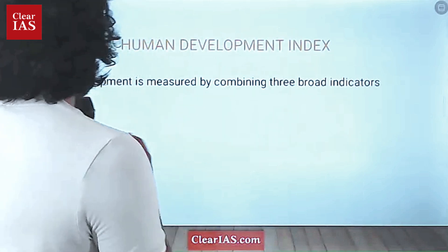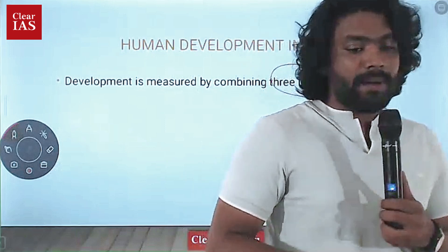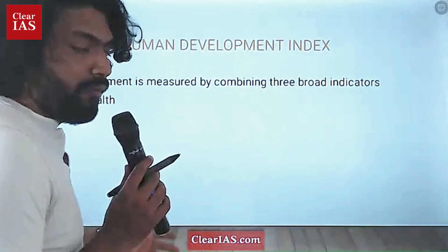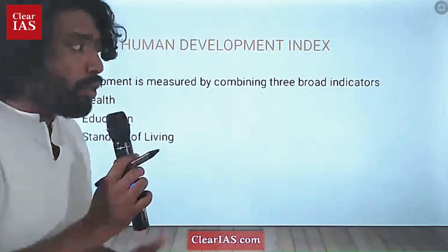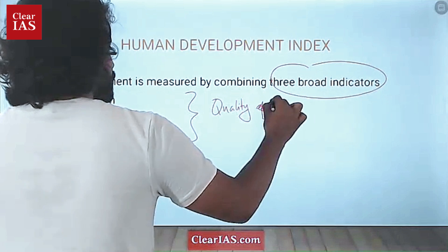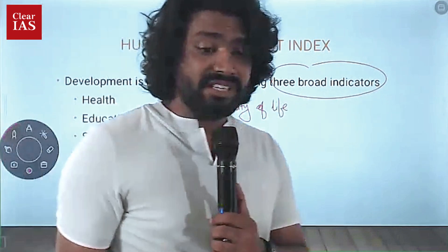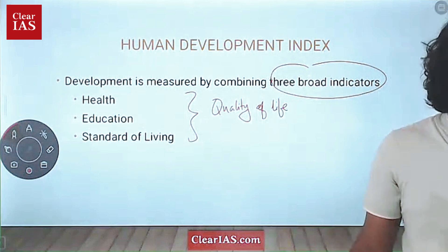What is the Human Development Index? In the Human Development Index, development is measured by combining three broad indicators. In 1990, as a part of UNDP's welfare program, they actually developed this index and the first report was released in 1990. This was the most important first initiative, and it was based on combining three broad indicators: health, education, and standard of living. All three actually point to quality of life. These were the broad dimensions on which the Human Development Index was built.